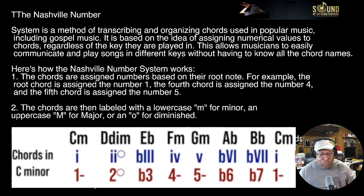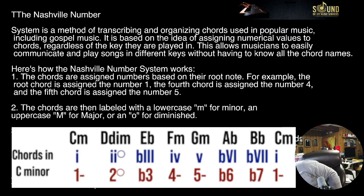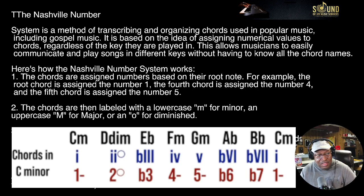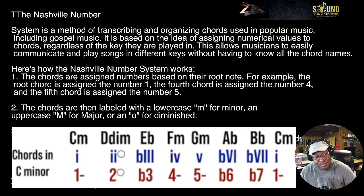Now again, I would have written it differently — I go against the grain. I invert the chords. So if I were doing this, that would be my one. They say D diminished, so they went here. Eb — which is number three. F minor. G minor — 5 G minor. A-flat major. B-flat major.